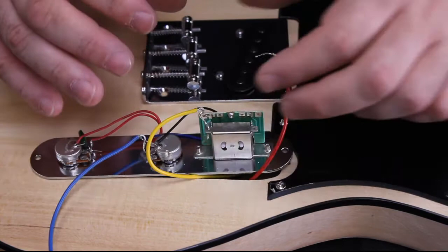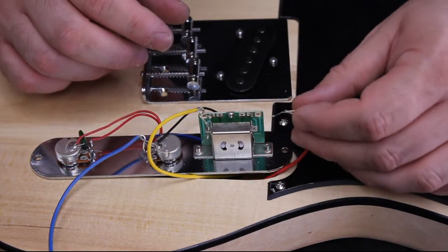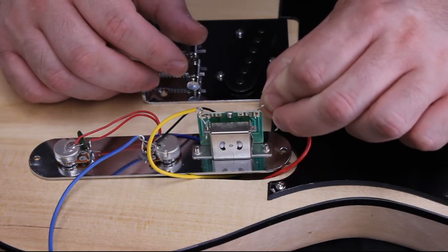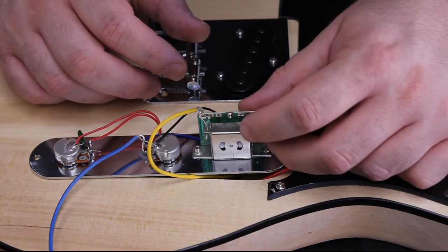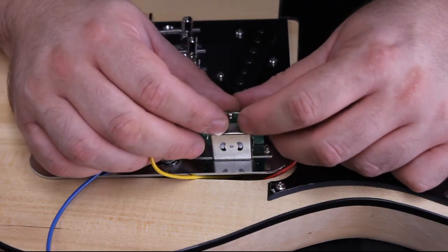Now we'll do the same with the other side of the switch. Simply feed the signal wire through, loop it into the hole next to it, and solder in place.